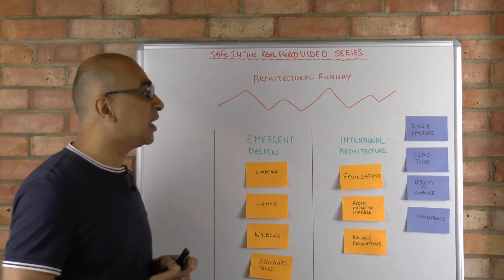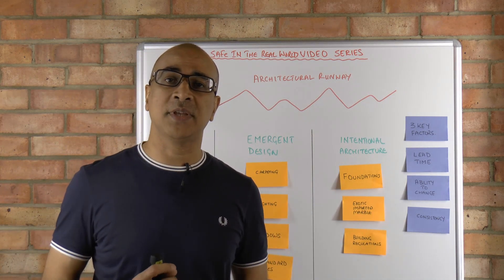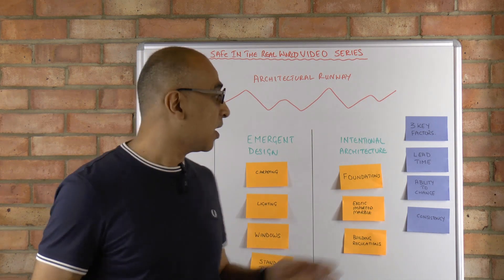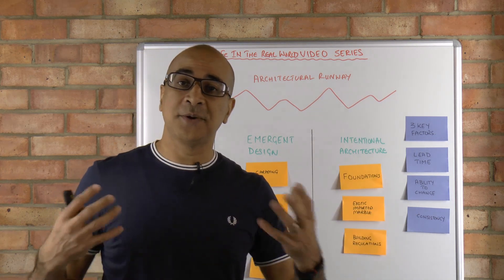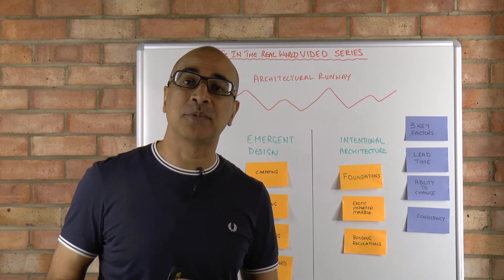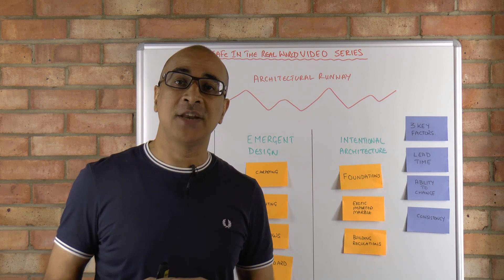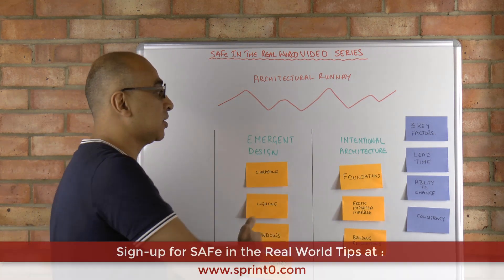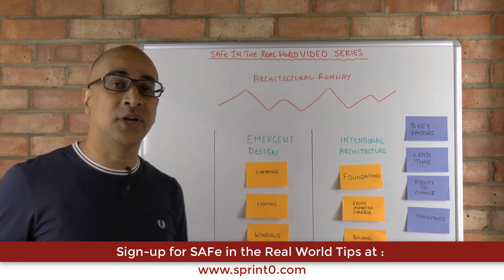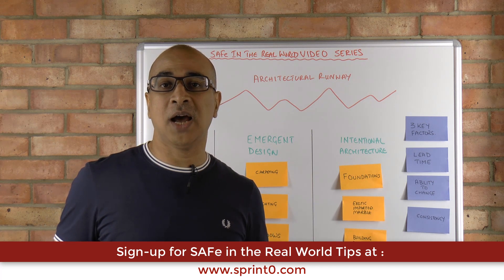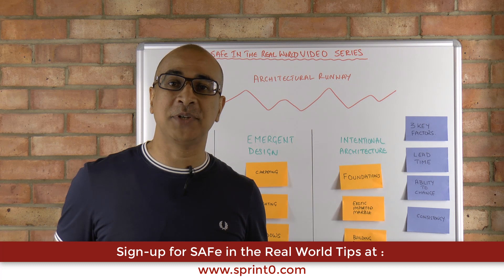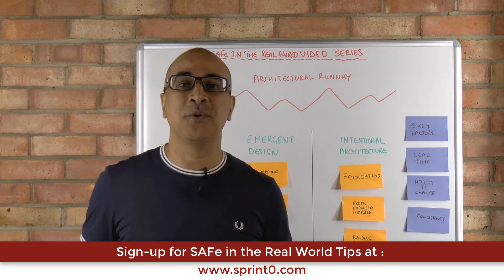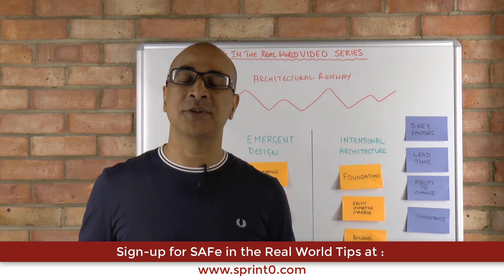There you have it — some of the techniques and the three factors you can use to help determine what goes in your architectural runway. Your architectural runway has two elements: emergent design and intentional architecture. I hope you found that useful. Please subscribe to Safe in the Real World at www.sprintzero.com, and I look forward to speaking to you next week. Thanks very much, goodbye.